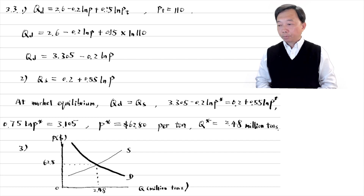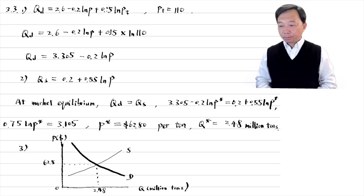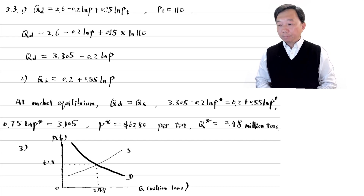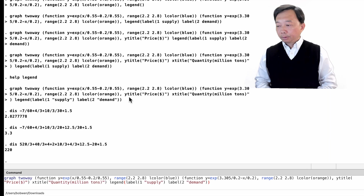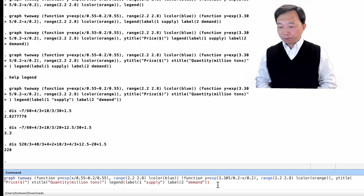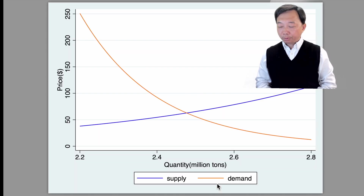In the third step, we draw a diagram to show the market equilibrium. We put the price on the y-axis and quantity on the x-axis. The supply curve is upward sloping, and the demand curve is downward sloping. The intersection of the supply curve and the demand curve determines the market equilibrium price and quantity. You can use Stata to draw an accurate graph for the two curves. You will find the Stata command for the graph below.